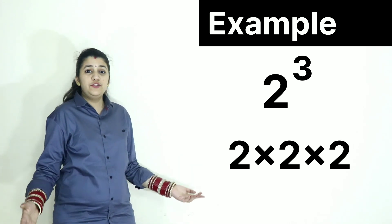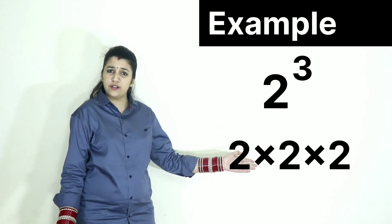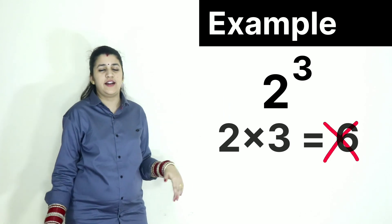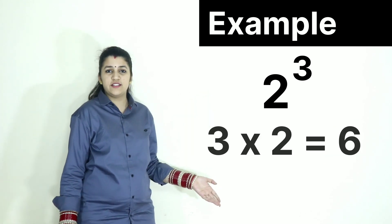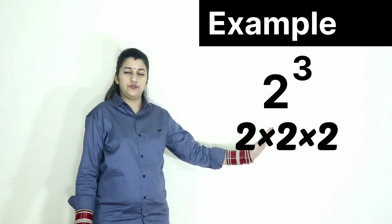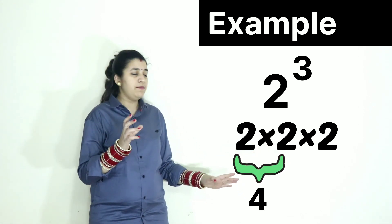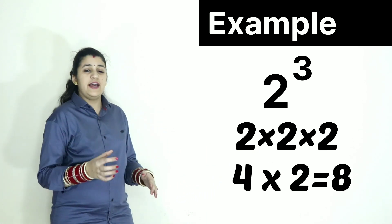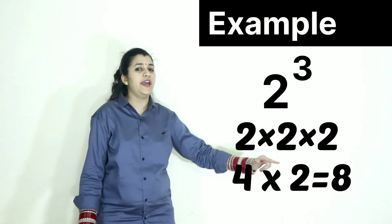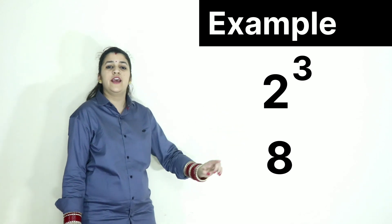Many students get confused with this multiplication. What do they do? 2 times 3 equals 6. That is wrong. Or 3 into 2 equals 6. That is also wrong. So what do you have to do? 2 into 2 into 2 means 2 into 2 is 4. Then multiply this result with the next number, that is 4 into 2 equals 8. So 2 raised to the power 3 results in 8.